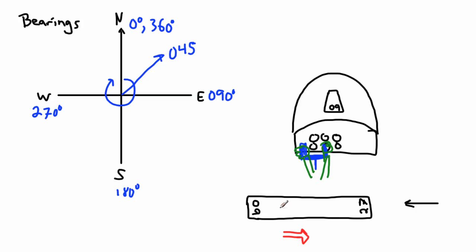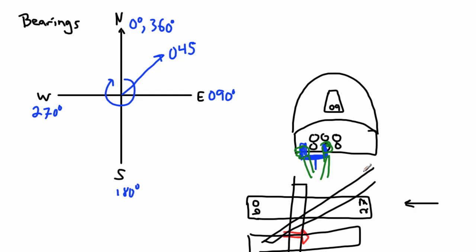At a big airport they might have multiple runways — some going north-south, some going other directions. If you're told to land on runway 09, and there are two parallel runways heading in the same direction, they'll add an R or L designation — so you'd have runway 09R and 09L — right and left. When they tell you which runway to land on, you know exactly which way to head and which runway to line up with. It's actually very descriptive.